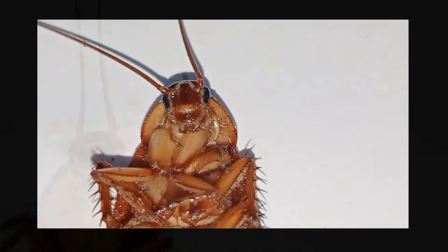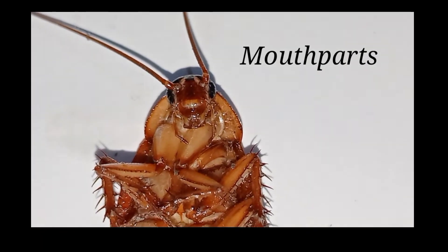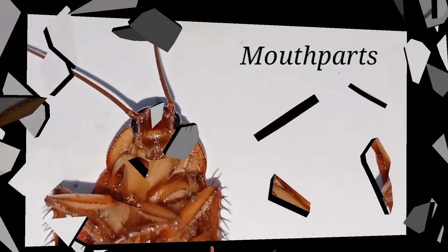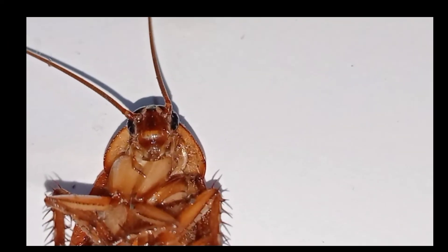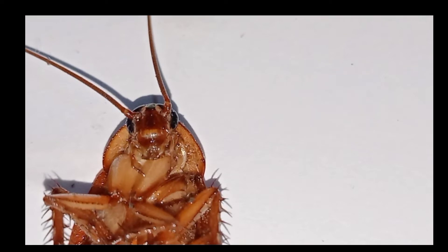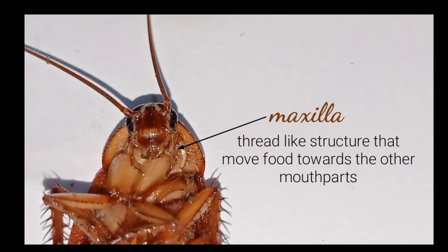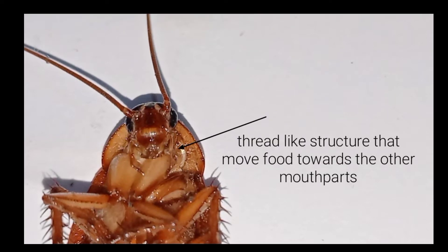There is their mouth that grinds food into small pieces. It has two different jaws. The upper jaw, called the mandible, is a strong structure that cuts and chews food. And the lower jaw, the maxilla, is a thread-like structure that moves food towards the other mouth parts.